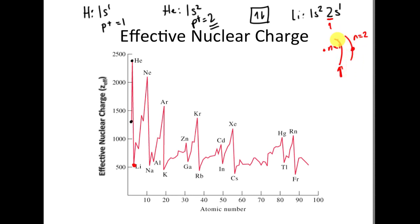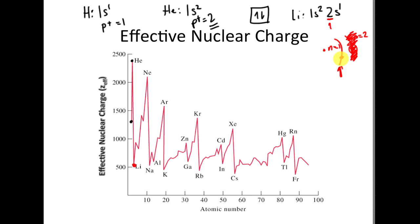A new energy level has been added, shielding has gone up from the 1s energy level, and therefore this electron is very easy to remove. Now if we remove that electron, we're back into the first energy level. What happened to shielding? Shielding went down. If shielding went down, ZEFF goes back up. So trying to remove the next electron is going to require a lot more energy because ZEFF went up.